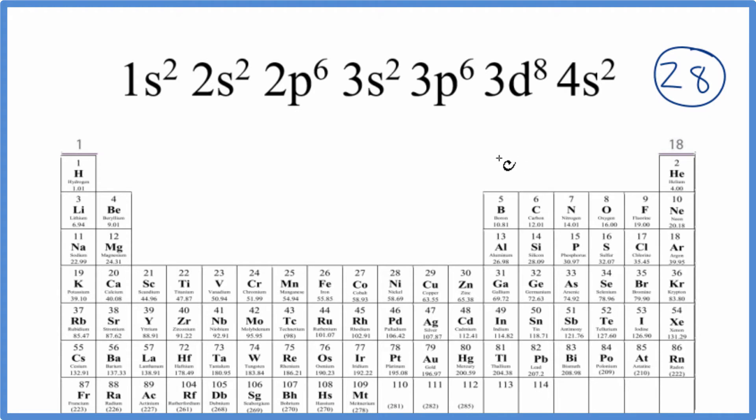On the periodic table, we can find the atomic number for an element, and the atomic number represents the number of protons. Since all of the elements on the periodic table are neutral, there's no negative or positive after them, the number of protons, the atomic number, equals the number of electrons.